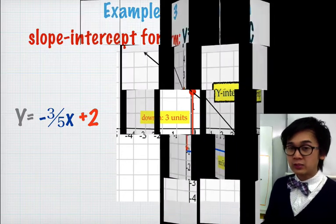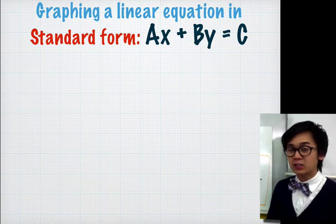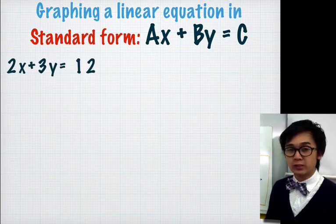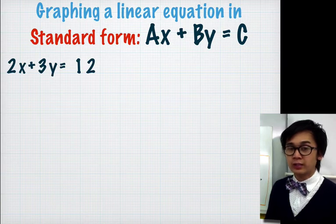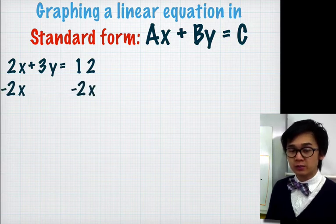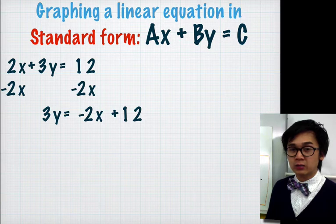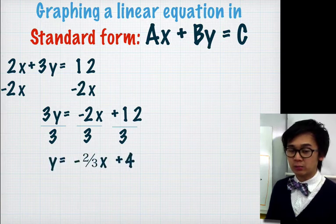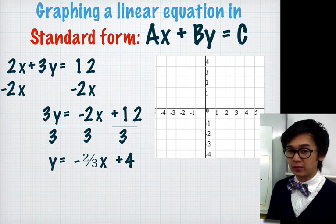For the last example, we need to graph an equation that is not in slope-intercept form — it's in standard form: 2x + 3y = 12. The first step is to convert it to slope-intercept form by isolating y. Subtract 2x from both sides to get 3y = -2x + 12, then divide all terms by 3, giving us y = (-2/3)x + 4. Now that it's in slope-intercept form, we can graph it using the same technique as in the previous examples.